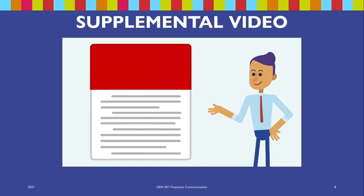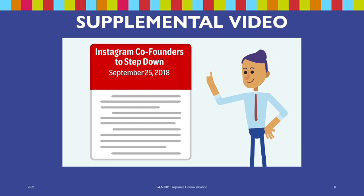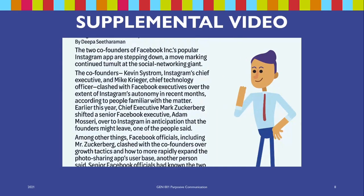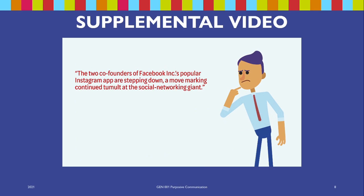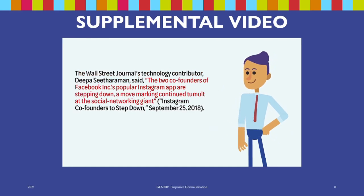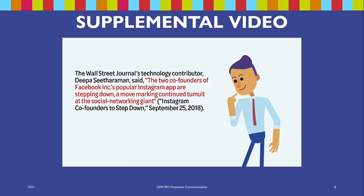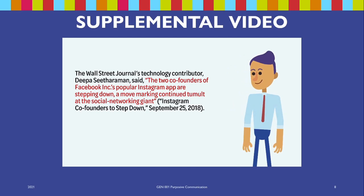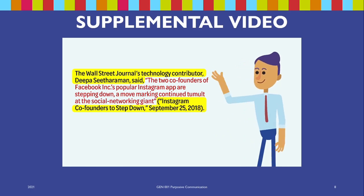Let's look at an example of a direct quotation from an article called 'Instagram Co-Founders to Step Down,' about Instagram's founders from the September 25, 2018 edition of the Wall Street Journal. In order to use this quote in our writing, we need to indicate who said it and where it can be found: 'The Wall Street Journal's technology contributor Deepa Sitaraman said, the two co-founders of Facebook Inc.'s popular Instagram app are stepping down, a move marking continued tumult at the social networking giant.'